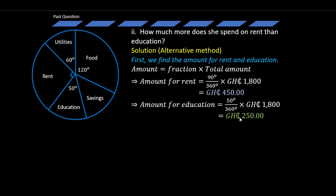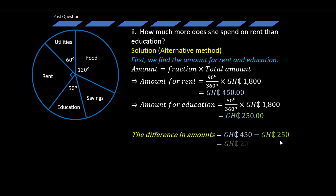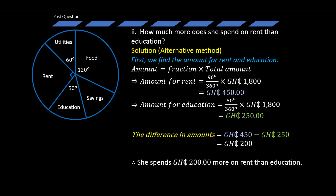The difference is 450 Ghana cedis minus 250 Ghana cedis, which equals 200 Ghana cedis — the same answer as before. She spends 200 Ghana cedis more on rent than education. Thank you for your time, may God bless you. Stay tuned for more videos on essential skills and NTC teachers licensure examination. Goodbye.